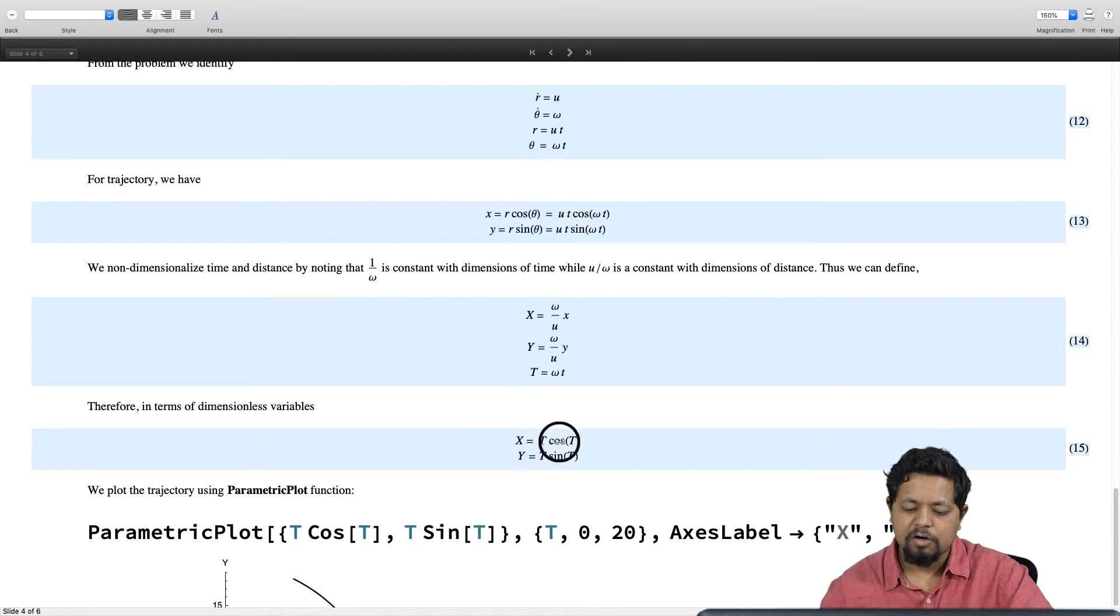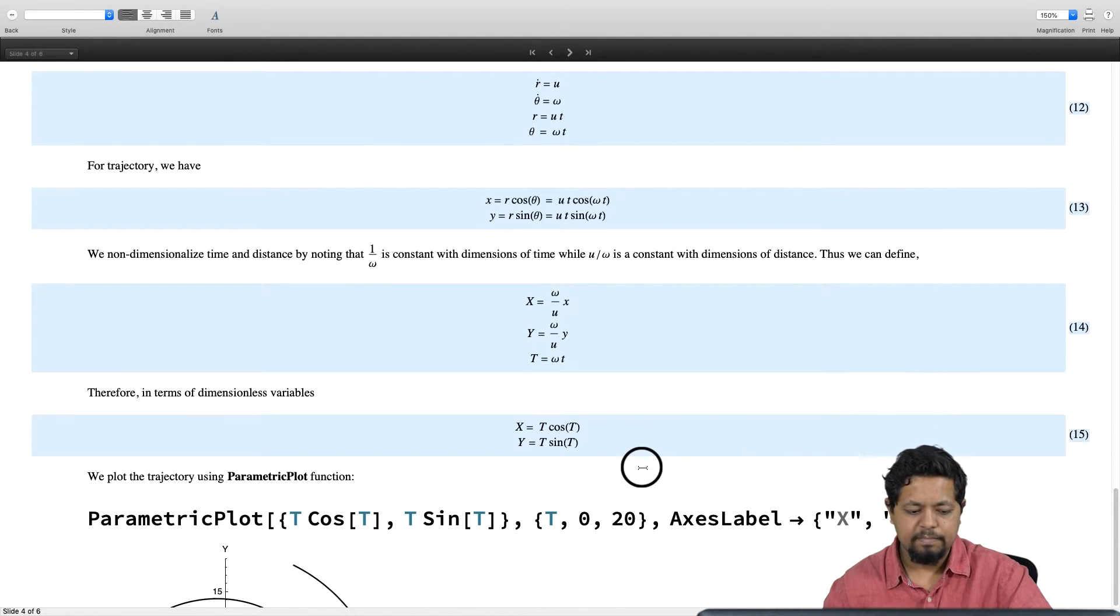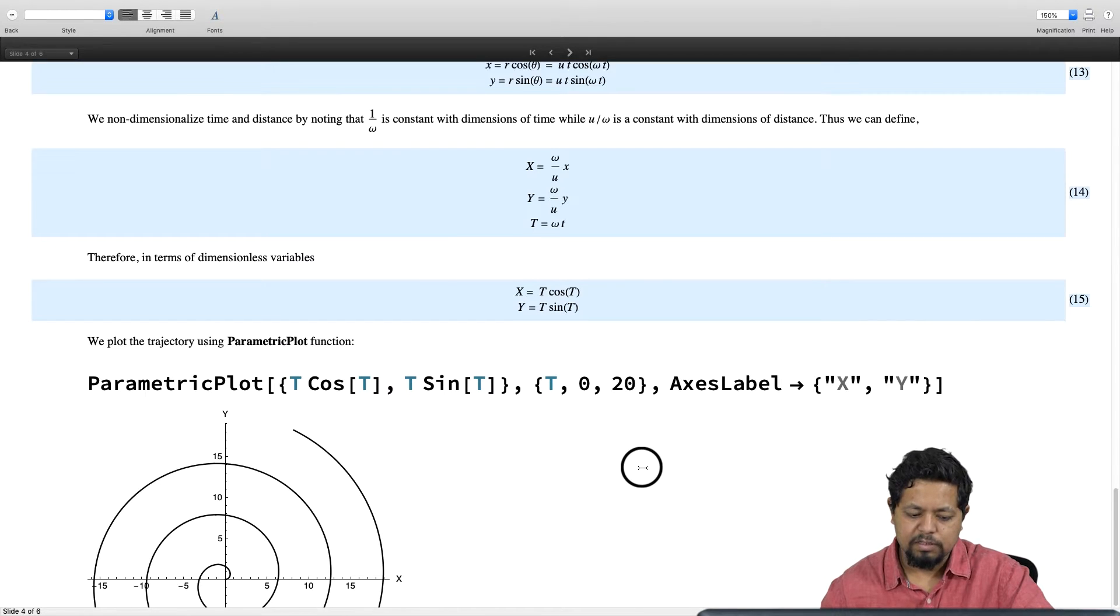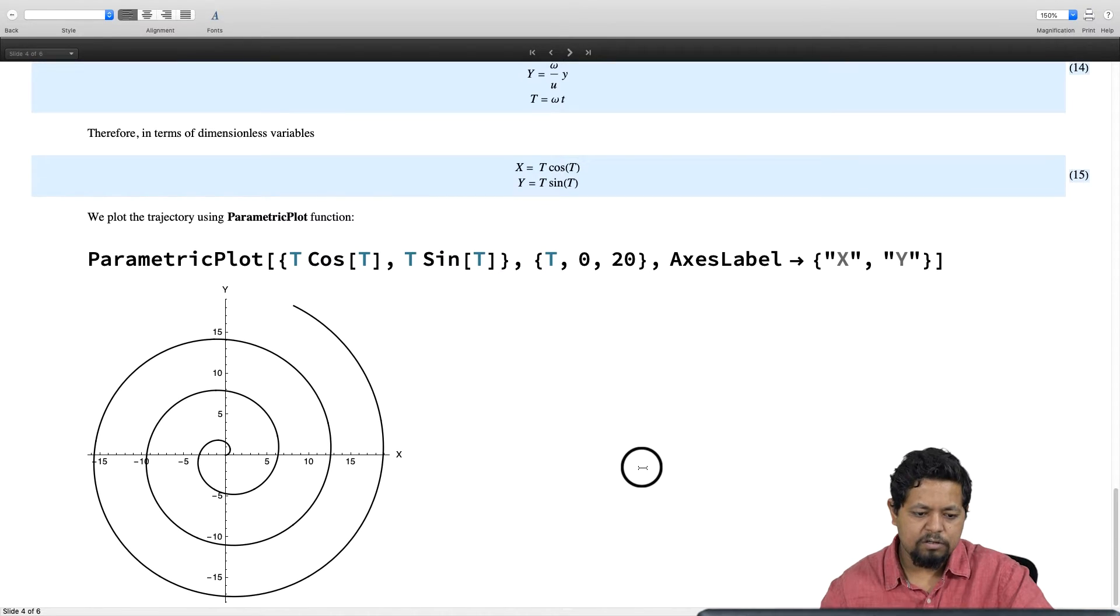We will use parametric plot to make a plot for this. For parametric plot, we will use a function called ParametricPlot—this is a new function you are seeing for the first time.